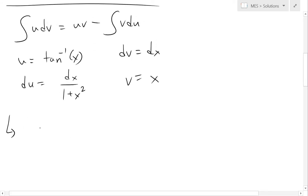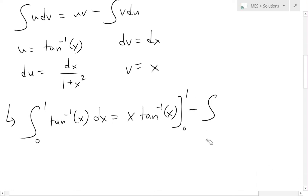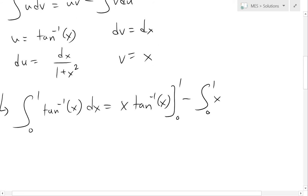So now we can plug the terms inside. We get from 0 to 1 of u, which is inverse tan of x, dv, which is dx, equals v times u. So we have x times inverse tan of x from 0 to 1, minus now integral from 0 to 1 of v.